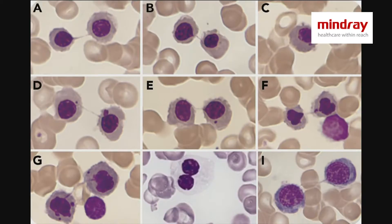If we talk about the dysplastic features, I'm just showing you two of them. The majority of these pictures show you the nuclear bridging of red cells. At the bottom, you see a pseudo-Pelger-Huët anomaly.